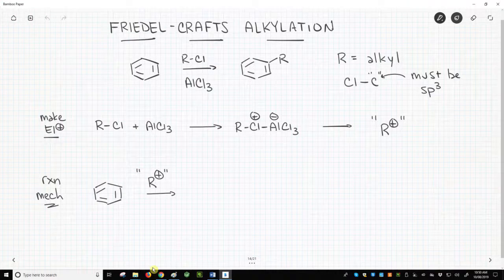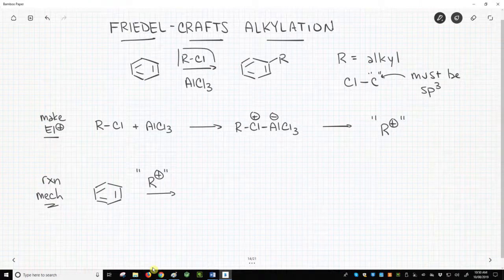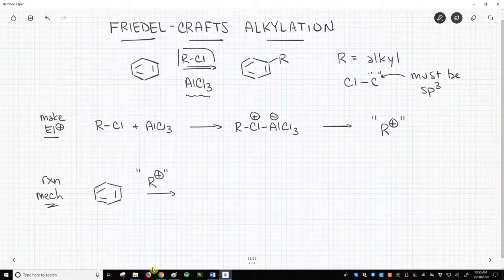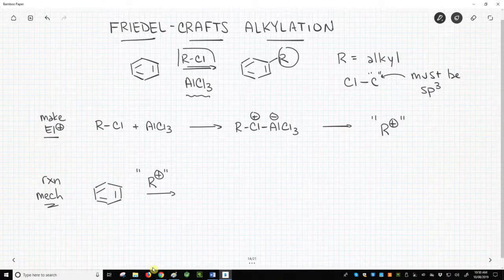At the top of the screen is our general reaction. Benzene reacts with an alkyl halide, RCl, in the presence of aluminum trichloride, AlCl3.